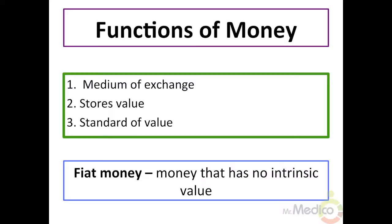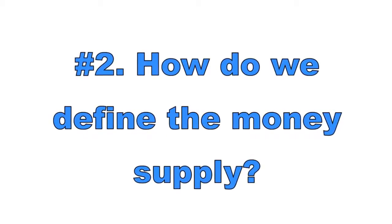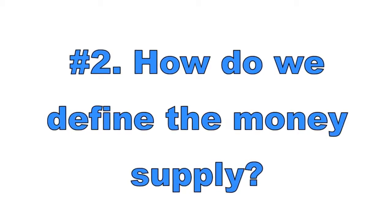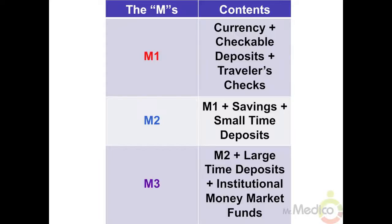Modern economies use fiat money, which means that the money has no intrinsic value. In other words, it is money because the government says so. Fiat money is not backed by gold or silver; it is backed by our faith in the government and monetary system.